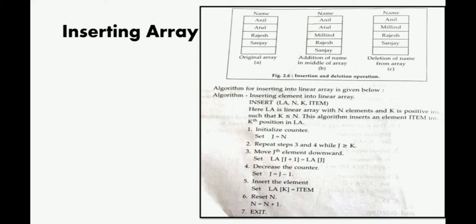For inserting, you need the algorithm. Inserting element into linear array: INSERT(LA, N, K, ITEM). Here LA means linear array, N means the array consists of N number of elements. In this case four elements: Anil, Atul, Rajesh, Sanjay, so N equals 4. K is a positive integer such that it should be less than or equal to N - the kth position where we want to insert. Item means the element that we are adding, in this case Milind is the item.